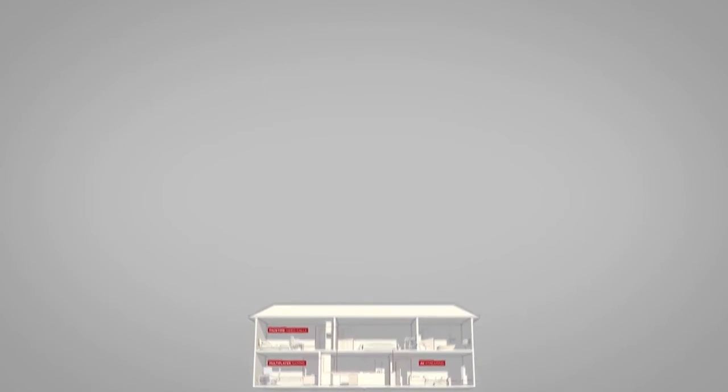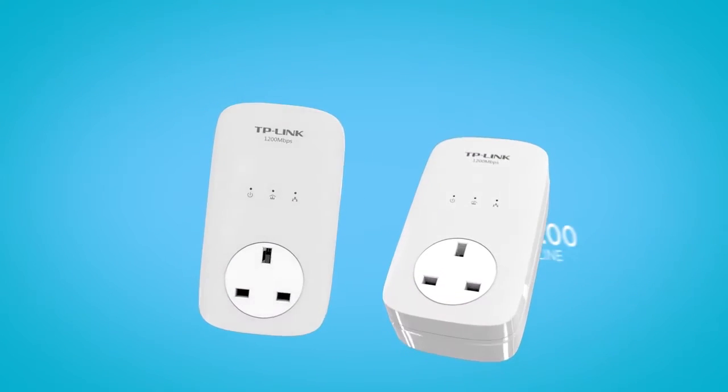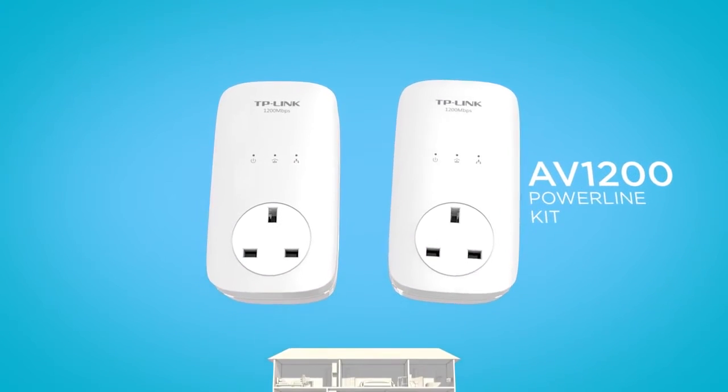TP-Link's latest innovation, the AV1200 Powerline kit, is designed to enable even faster, more reliable home networks.